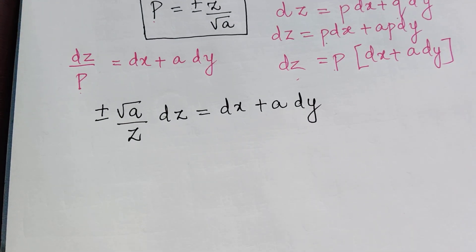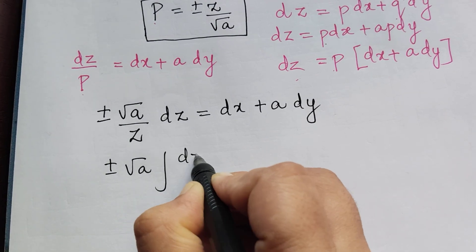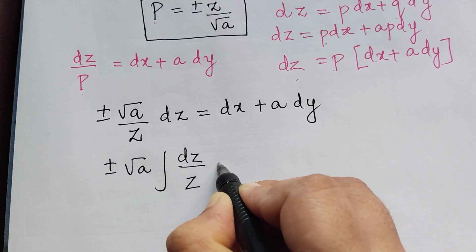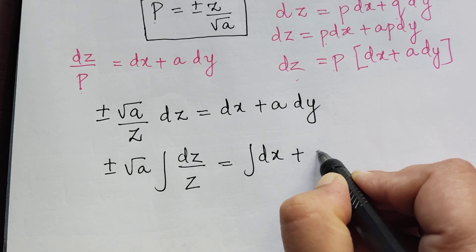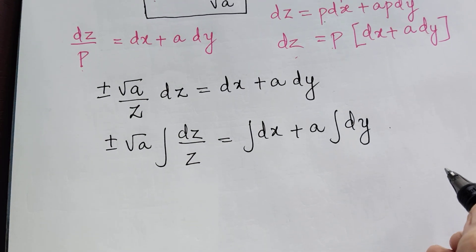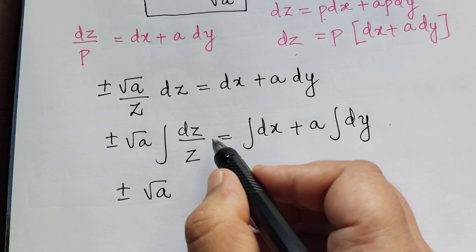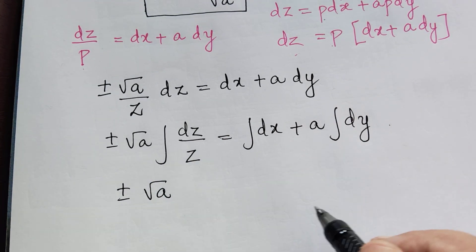Now integrating both sides, we have ± √A ∫(dZ/Z) = ∫dx + A∫dy. That will be ± √A times the integral of dZ/Z, which is log Z.